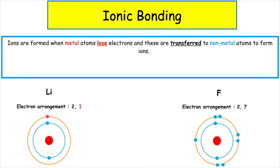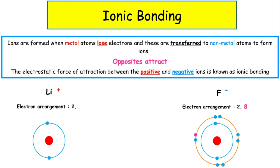Ions are formed when metal atoms lose electrons, and these are transferred to non-metal atoms to form negative ions. Remember, opposites attract. The positive metal ion will be attracted to the negative non-metal ion. The electrostatic force of attraction between the positive and negative ions is known as ionic bonding.